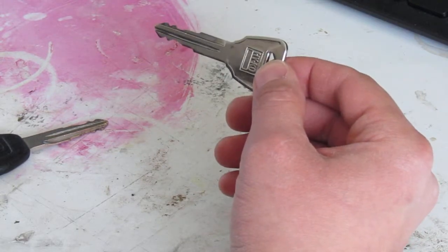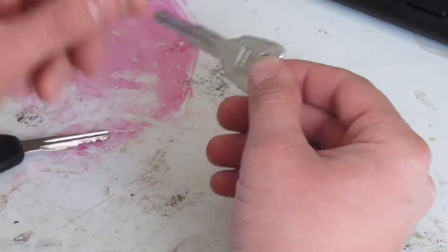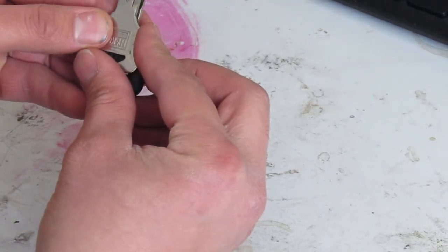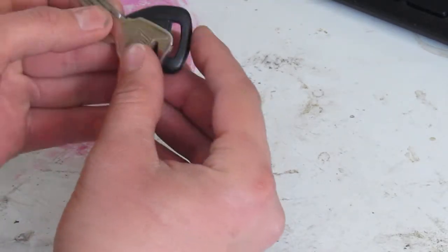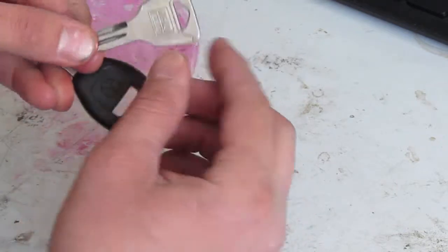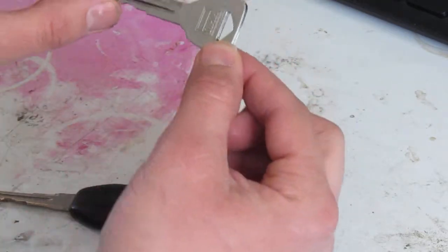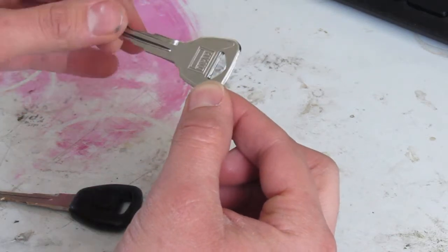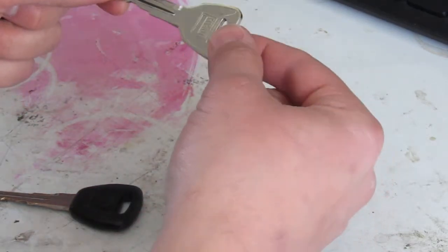I finally found a forum where someone made a suggestion and they stated that the new key has a shoulder here which prevents it from inserting all the way into the ignition which then prevents it from turning to the off position.